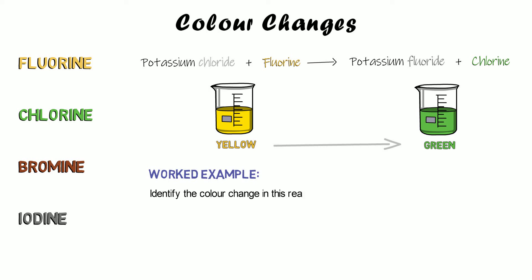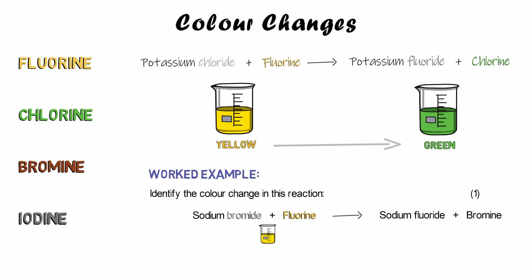They might ask you: identify the colour change in this reaction — sodium bromide plus fluorine produces sodium fluoride plus bromine. Sodium bromide is colourless because the bromine is part of a compound. The fluorine on its own is yellow. So the reactants overall look yellow. Sodium fluoride in the products is colourless, but the bromine on its own will appear brown. So overall the products appear brown or orange. The colour change overall is yellow to brown — that's what you would write.